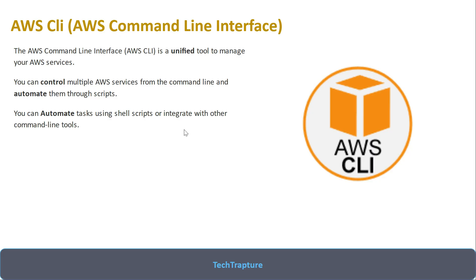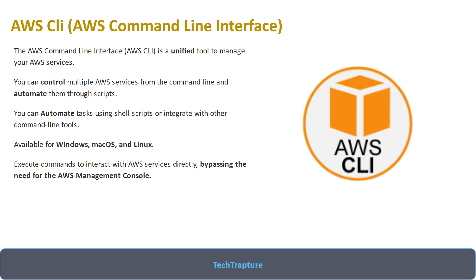You can automate tasks using shell scripts, integrate with command line tools, and it is available for Windows, Mac OS, and Linux. You just configure your CLI for a particular OS and you can use it without any issue. It also bypasses the need to go to the console. It provides flexible output support for automation scripts — for example, when listing 100 EC2 instances you can get output in JSON format, CSV, or table format.